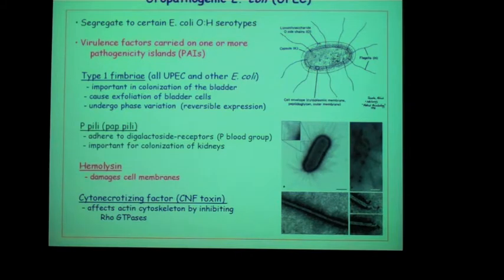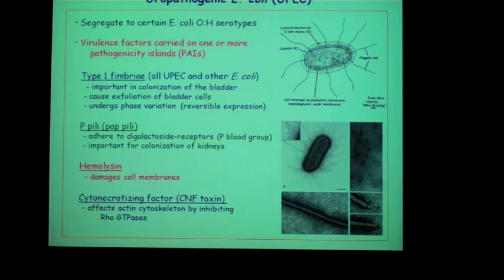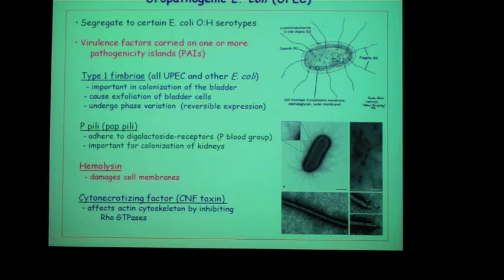One important UPEC virulence factor is type 1 pili, shown to be important for colonizing the bladder. They cause exfoliation of bladder cells, which helps elicit an immune response. These type 1 fimbriae undergo phase variation — turning on and off spontaneously — and when off, the organism can ascend more easily to the kidney. UPEC also make P pili, or pap pili, which adhere to the P blood group digalactosine receptors and are important for colonization of the kidneys. UPEC also produce two toxins: hemolysin and the cytotoxic necrotizing factor (CNF), which contribute to tissue damage during UTI.